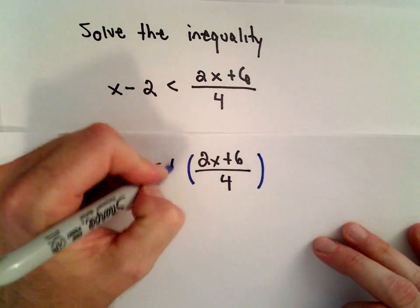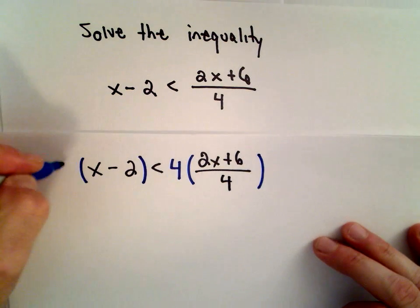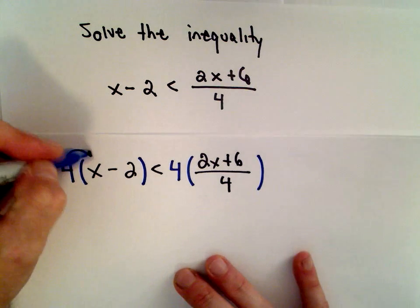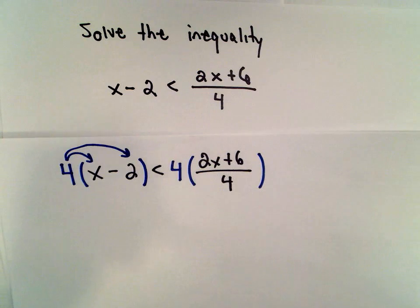Since I'm dividing by 4, I'm going to multiply both sides by 4. Make sure you add parentheses on the left side because you want to use the distributive property. If not, you'll certainly make a mistake.